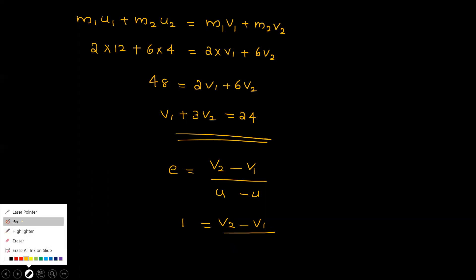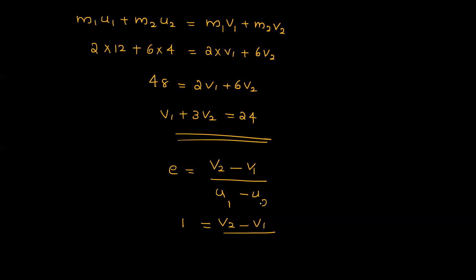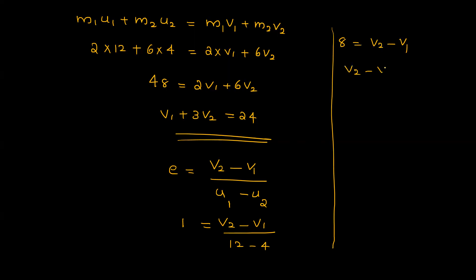For a perfectly elastic collision, the coefficient of restitution equals 1, so V2 minus V1 divided by U1 minus U2 equals 1. That gives: V2 minus V1 = 12 minus 4 = 8. So V2 minus V1 = 8. This is equation 1. And from conservation of momentum: V1 + 3*V2 = 24. That is equation 2.